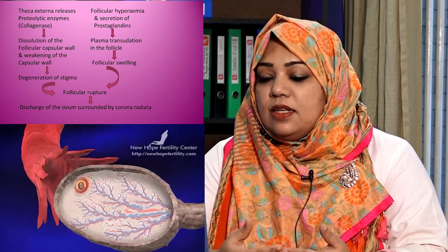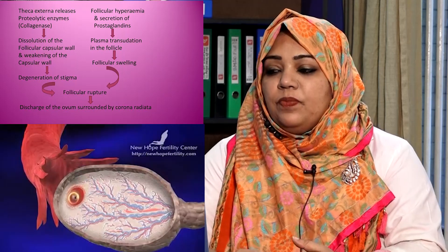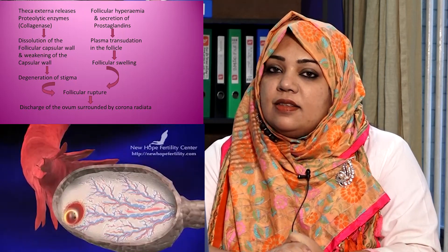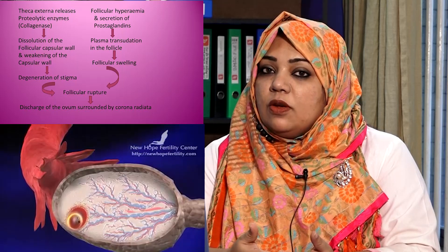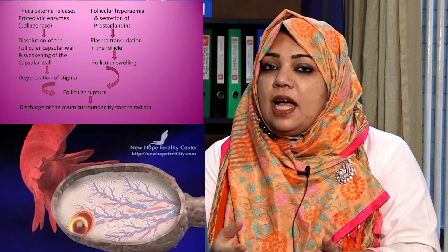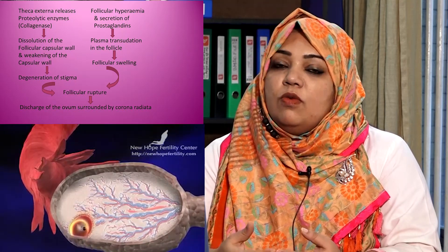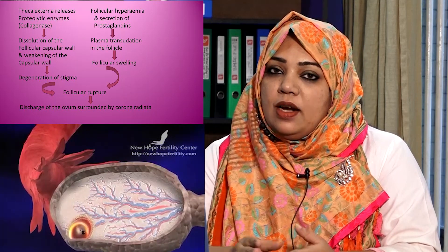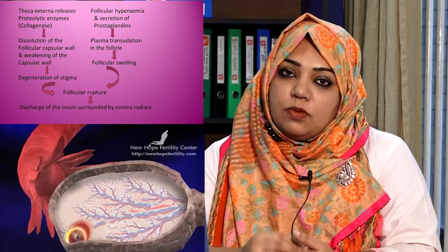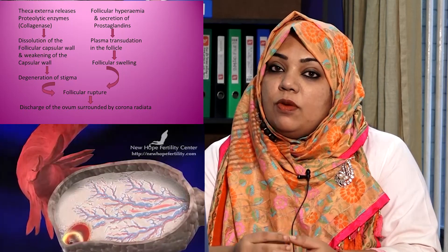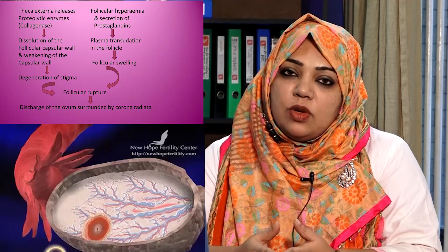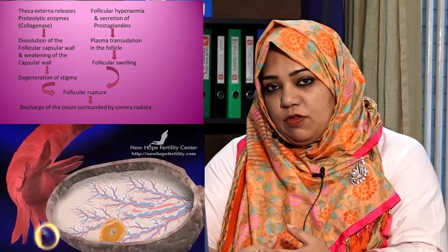This ultimately leads to degeneration of the stigma. On the other hand, there is follicular hyperemia and secretion of prostaglandins. There is increased blood supply to the follicles and plasma transudation into the follicles, causing follicular swelling. So two things are happening to this follicle: follicular swelling and dissolution and weakening of the follicular capsular wall, and ultimately these two events working together lead to rupture of the follicle.